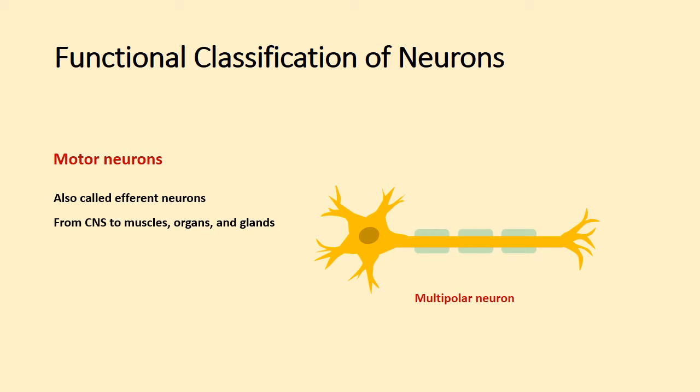Motor neurons are multipolar and divided into upper motor neurons and lower motor neurons. Upper motor neurons transmit signals from the brain to the spinal cord. Lower motor neurons transmit signals from the spinal cord to the muscles of the body.